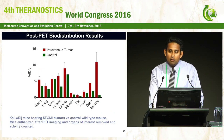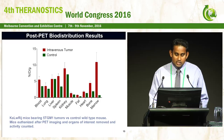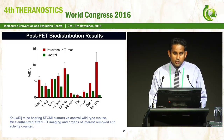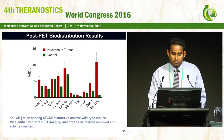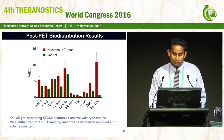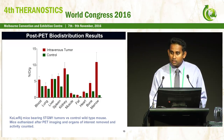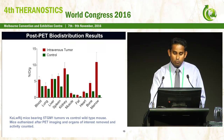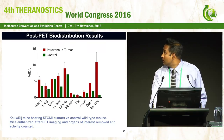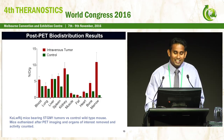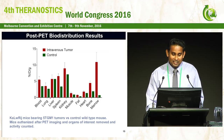We have done post-PET biodistribution studies. In the intravenous tumor model, there is a tenfold uptake difference in the malignant bone marrow compared to control mice. There is also a contrasting difference in the bone and the spleen.